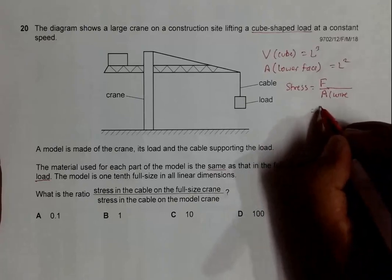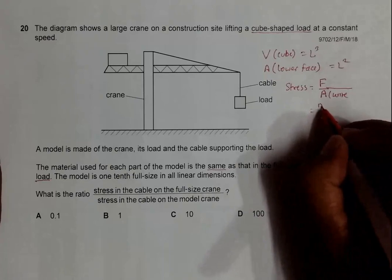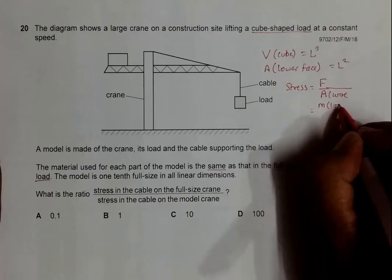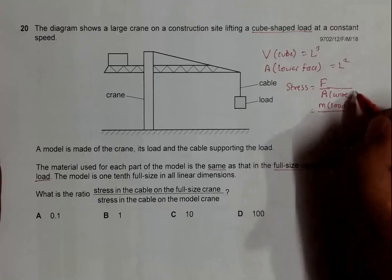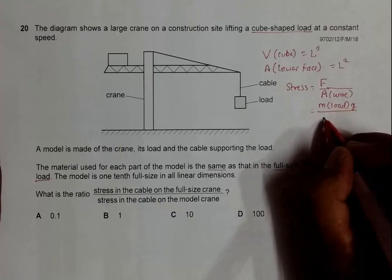Mass of the load equals ρ (density of the material) times volume of the material times g, divided by the area of the wire.